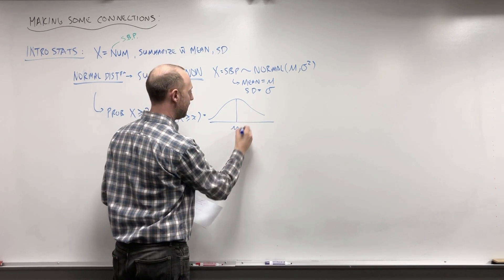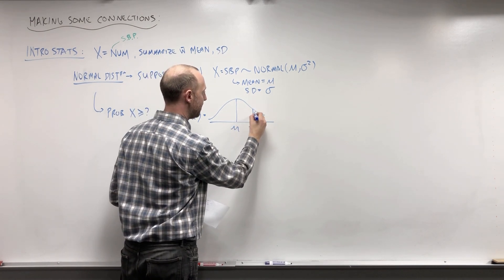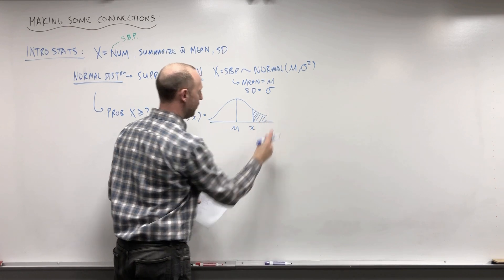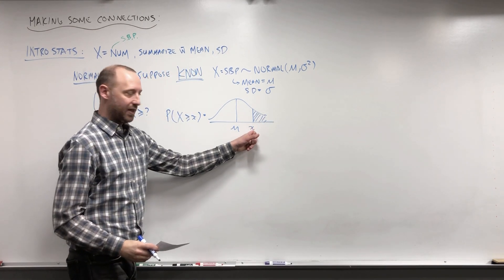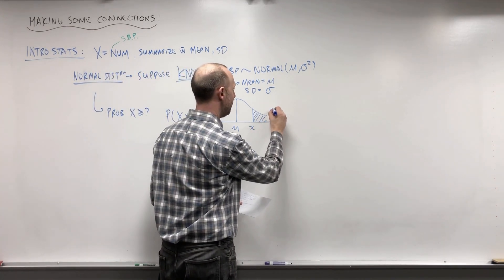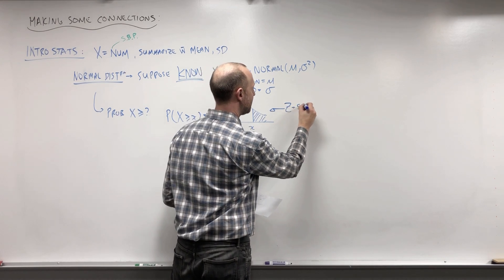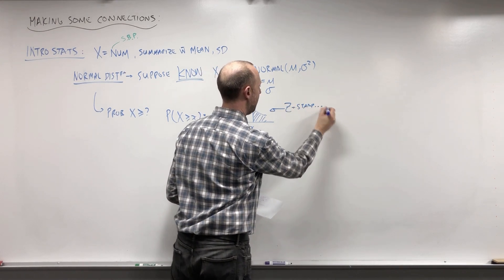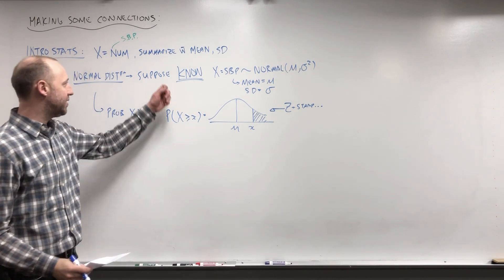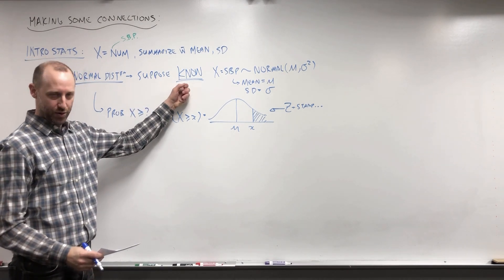Say, well, here's the mean, here's little x. What's the probability of someone's blood pressure being greater than or equal to that value? To do that, you standardize and you work through all these calculations. And they're always under saying suppose we knew the truth.